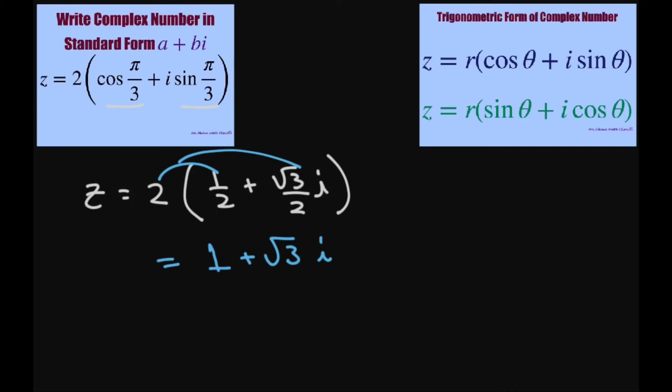Got to be careful with this i. Sometimes they will write this as 1 plus i square root of 3, just to make sure this i is not under the radical. So when you're writing this out, make sure you're not doing square root of 3 and you get that i too close, because it's not supposed to be under the radical.